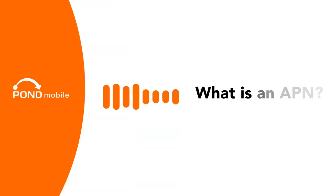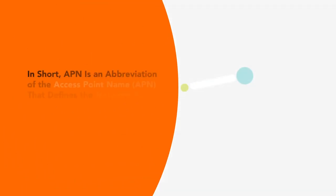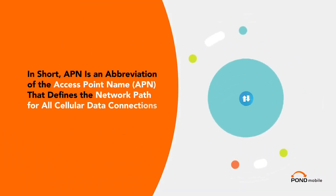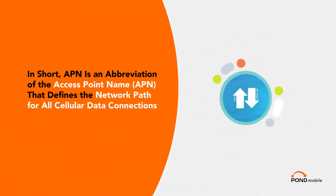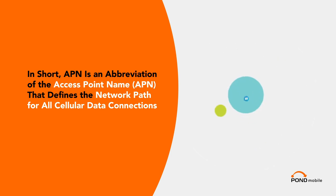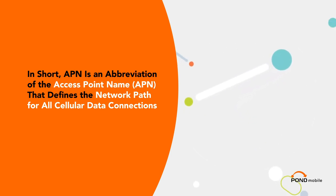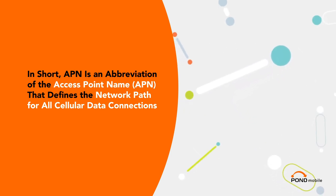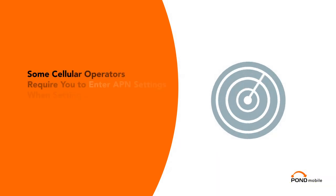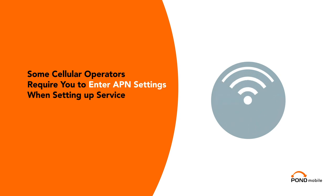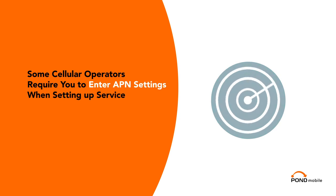What is an APN? APN is an abbreviation of Access Point Name. APN defines the network path for all cellular data connections. Some cellular operators require you to enter APN settings when setting up service.